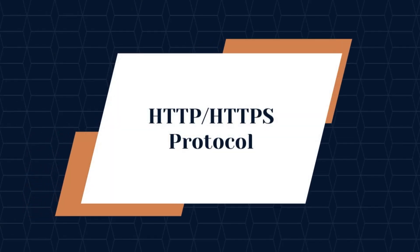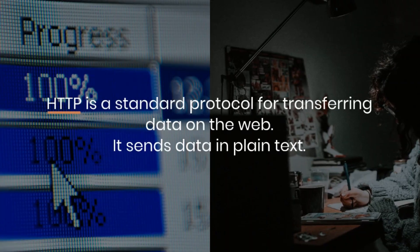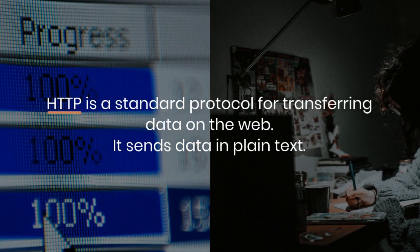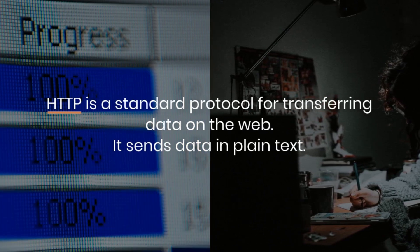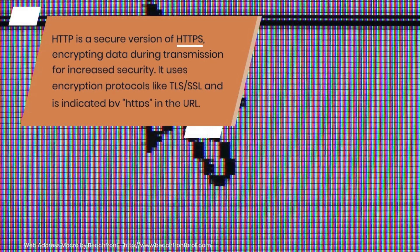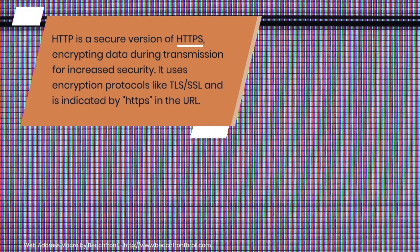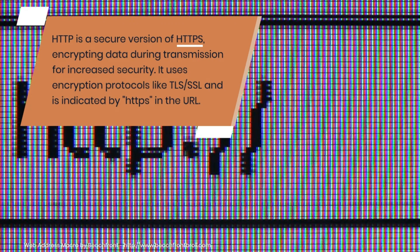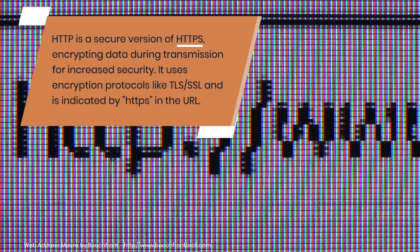HTTP, or Hypertext Transfer Protocol, is a standard protocol for transferring data on the web. It sends data in plain or simple text. HTTPS is a secure version of HTTP — it encrypts data during transmission for increased security, using encryption protocols like TLS or SSL, and is indicated by HTTPS in the URL.